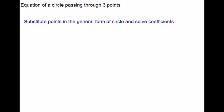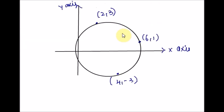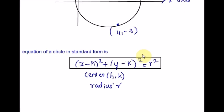Let me write the example on the board. We are given three points. To illustrate the problem, it is better to sketch the circle with the three points. This is the graph — this circle encloses all three points. We know the equation of a circle in standard form, where h and k are the coordinates of the center of a circle and r on the right side is the radius.